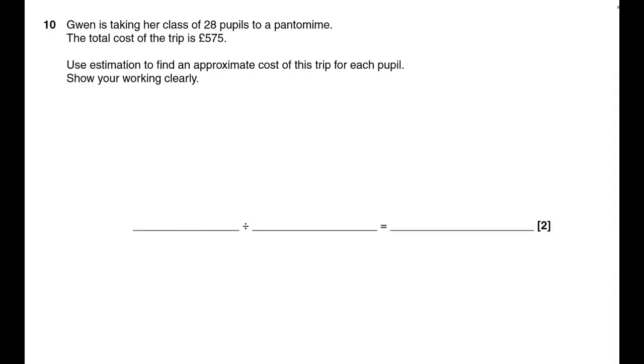Gwen's going to the pantomime with 28 pupils. Total cost of the trip is £575. Use estimation. That means you have to use estimation to find an approximate cost of this trip for each pupil.